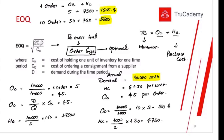Ordering cost and holding cost have a reverse relationship with each other. When ordering cost increases, holding cost decreases. For example, if you place 10 orders instead of one, ordering cost increases, but you only need to hold smaller quantities — 1,000 units instead of 10,000 — so holding cost decreases. Conversely, placing one large order keeps ordering cost very low but holding cost becomes massive.